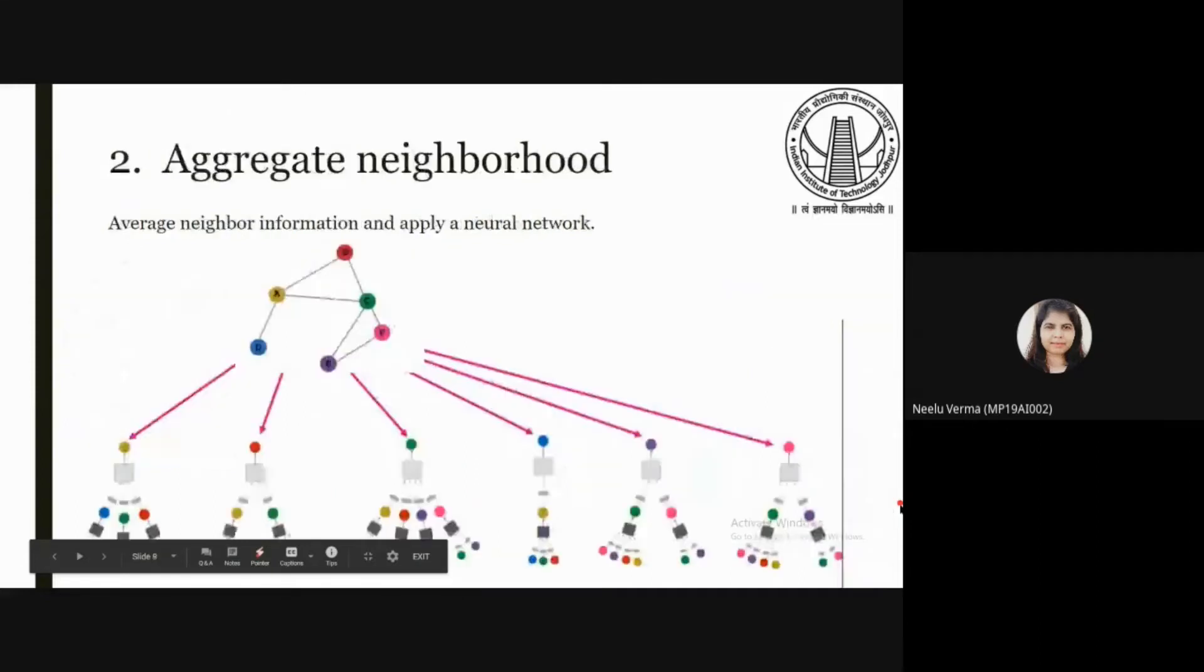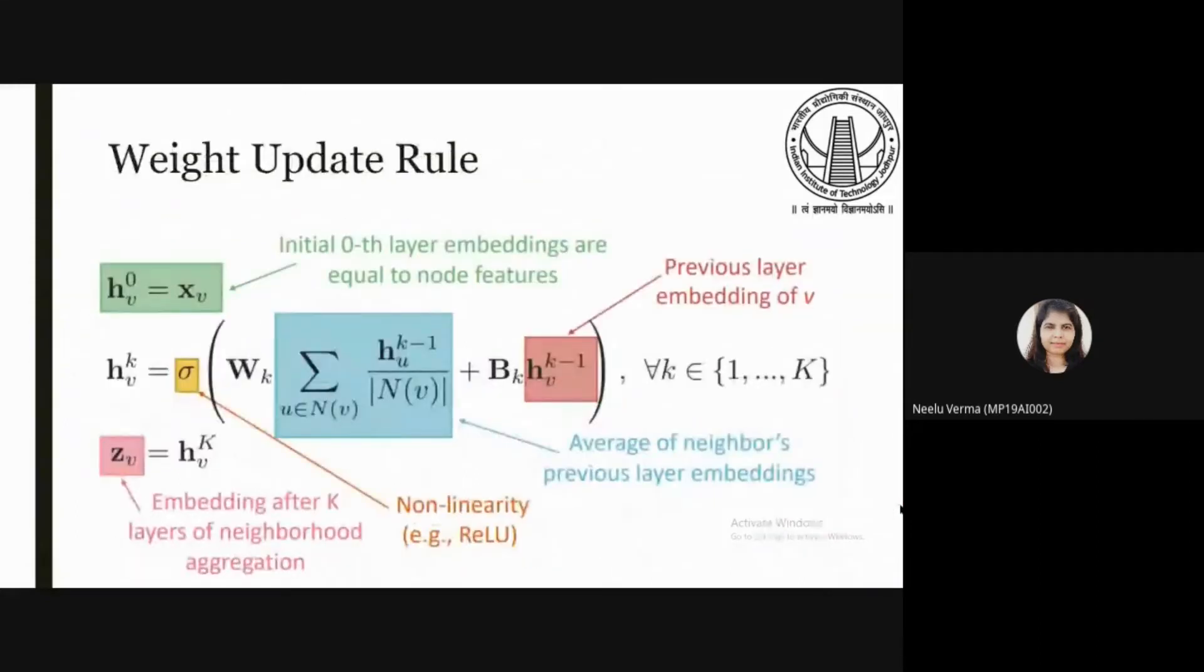Now the weight update rule. First step is to initialize the activation unit to be the feature vector. Here K is the layer position of the computational graph and the activation at the 0th layer will be the feature vector itself. The second equation is a recursive equation. At the kth unit we are calculating the activation unit which is basically a function of previous activation units. We are performing averaging operation here and that is the neighborhood activation unit divided by total number of neighbors.